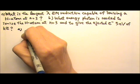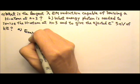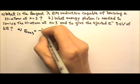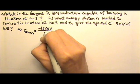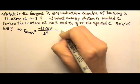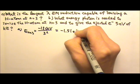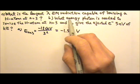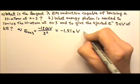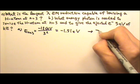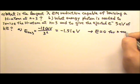Part A. We start at the n equals 3 state. So this energy is negative 13.6 eV divided by 3 squared, which is negative 1.51 eV. When we ionize the hydrogen atom, that means we're sending it to E equals zero, for n approaching infinity.